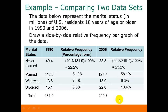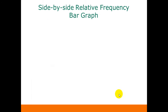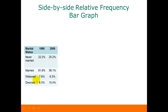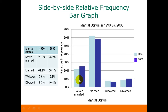Now we're ready to draw our side-by-side bar graph. Here's the data we need — just the percentages for 1990 and 2006 for our different categories. This graph really shows what is happening between 1990 and 2006 in terms of percentage of the total: never married — the percentage increased; married — the percentage decreased; widowed — it decreased; and divorced — it increased.